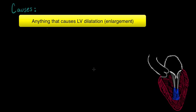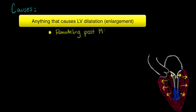You'll see I'm drawing arrows outward signifying enlargement of the left ventricle. If that cavity enlarges, so does the mitral valve annulus and it can no longer close effectively. Things that lead to left ventricular dilatation include a remodeling process — something you would see occurring after a myocardial infarction, or remodeling post-MI — which is the heart taking on a different shape to compensate for problems after a heart attack.